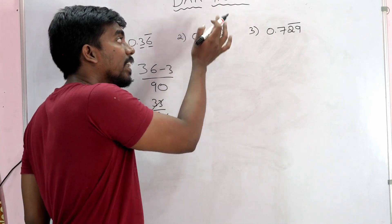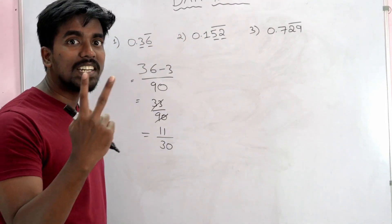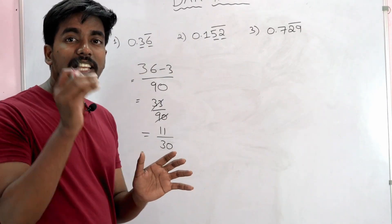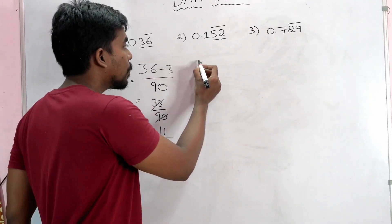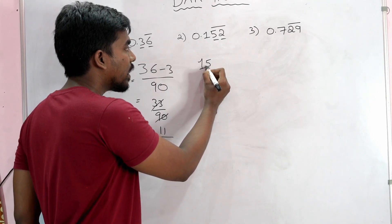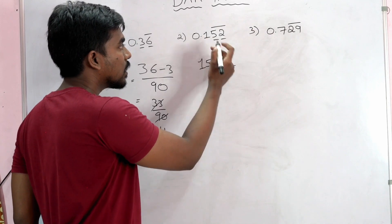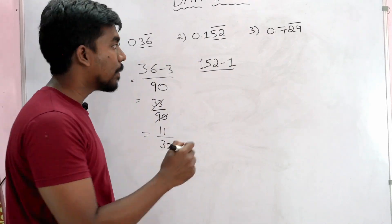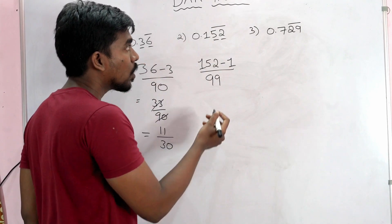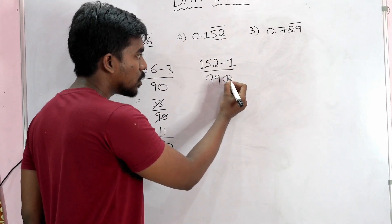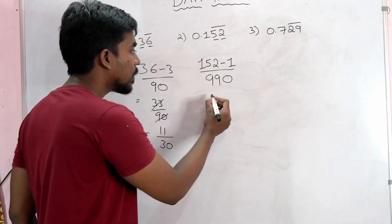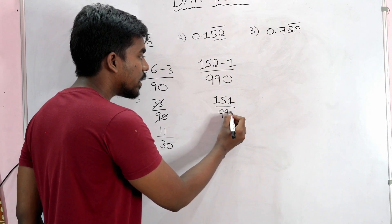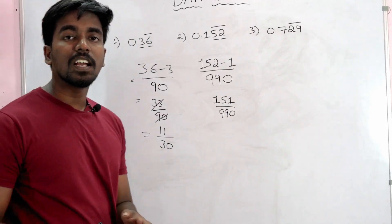Here we have 3 digits and there are 2 non-bar digits. If you don't have a total number, you don't have to minus. Here, 152 minus — if you don't have a bar, you don't have to minus 1. Divided by 2 digits. So what is 152? 151 divided by 990.